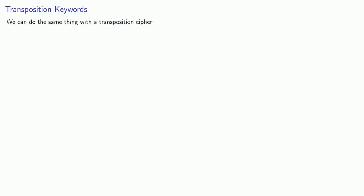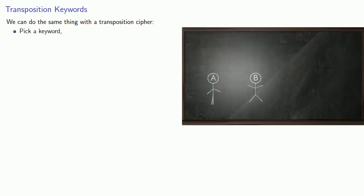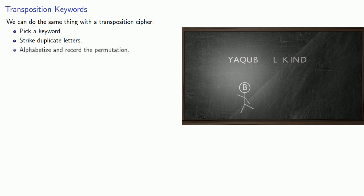We can do the same thing with a transposition cipher. We'll pick a keyword, strike out duplicate letters, and then alphabetize and record the permutation.